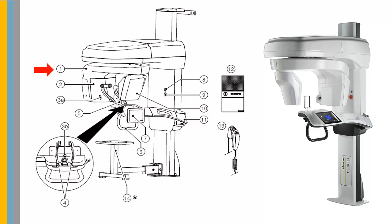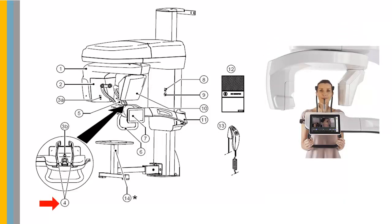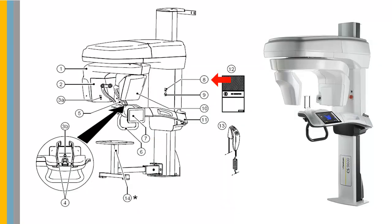The CS9600 unit components are: Unit Rotative Arm, X-ray Source Assembly, Positioning and Monitoring Cameras, Temple Supports, Chin Rest Base, and Hand Grips.